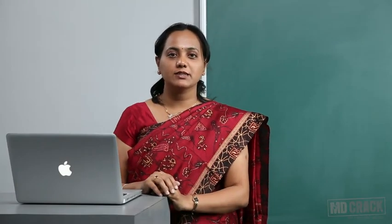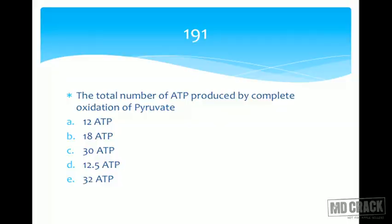Welcome back students to our last section of MCQs. The question is: what is the total number of ATP produced by complete oxidation of pyruvate? The answer is not what you expected — 12.5 ATPs. As per the newer calculations, each NADH gives rise to 2.5 ATPs rather than 3. From pyruvate to acetyl-CoA gives 3, and acetyl-CoA through the TCA cycle gives 12, so 12 plus 3 is 15.